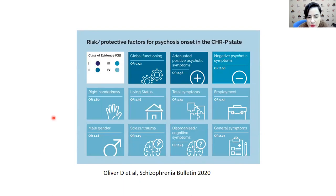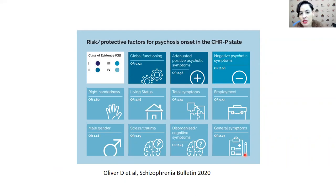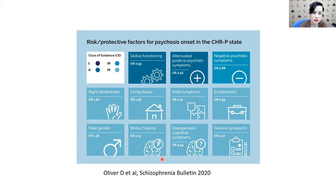This is an important study published in 2020 in Schizophrenia Bulletin analyzing risk and protective factors for psychosis onset in the clinical high-risk state. Factors with an odds ratio below one are protective factors, and those above one are risk factors. Almost all psychotic symptoms — positive, negative, total, or general — are risk factors for developing psychosis. However, good global functioning before onset and being employed are protective factors. Some of these factors we cannot modify, like male gender, but others we can, so this is important for us.